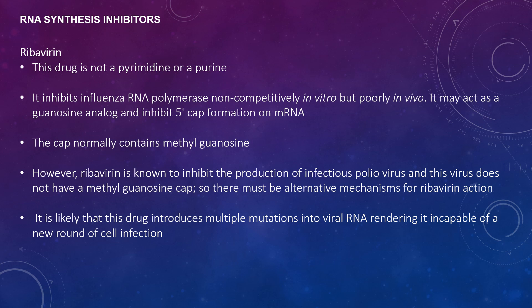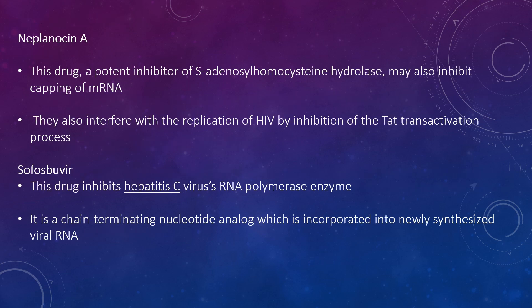Ribavirin is neither a pyrimidine nor a purine. It inhibits influenza RNA polymerase non-competitively in vitro but poorly in vivo. It can act as a guanosine analogue and inhibit 5'-cap formation of mRNA; the cap normally contains methylguanosine. However, ribavirin is known to inhibit production of infectious poliovirus, and this virus does not have a methylguanosine cap, so there must be alternative mechanisms for ribavirin action. It likely induces multiple mutations into viral RNA, rendering it incapable of a new round of cell infection. A protein inhibitor of S-adenosylhomocysteine hydrolase can also inhibit capping of mRNA and can interfere with HIV replication by inhibition of the TAT-transactivation process.